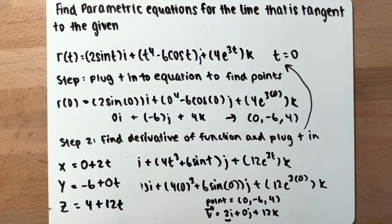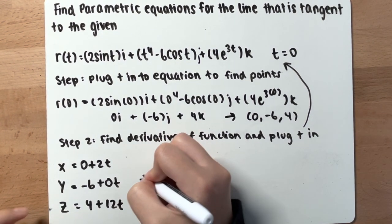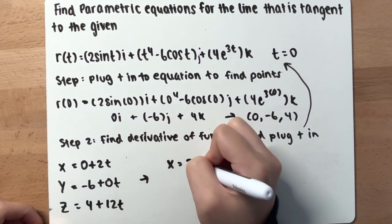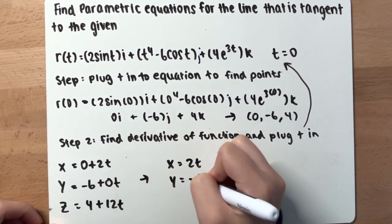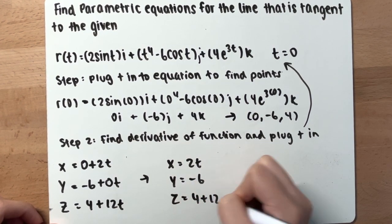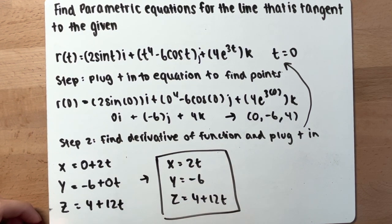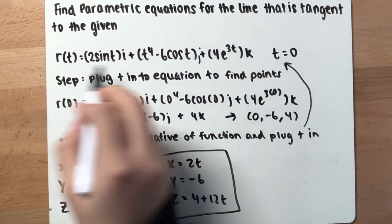Okay, if you simplify that, you have x equals 2t, y equals negative 6, and z equals 4 plus 12t. This is your parametric equation for the line tangent to this function. Thank you.